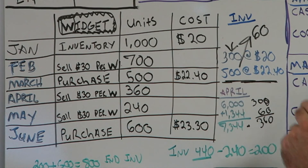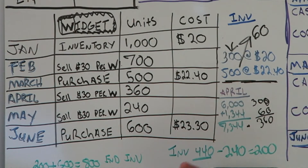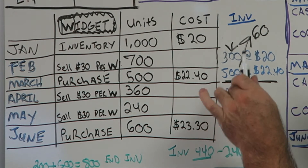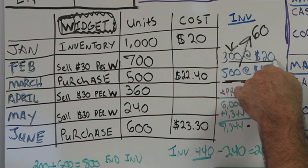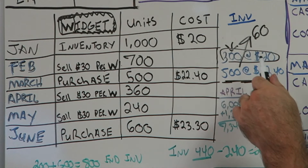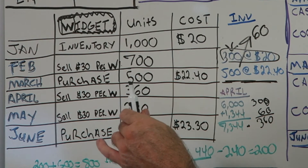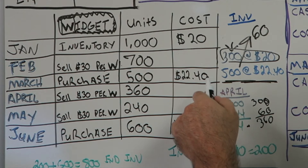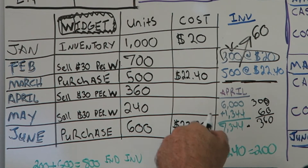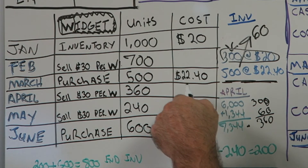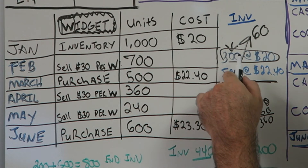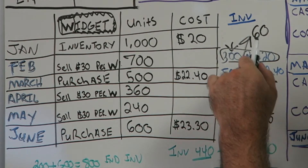Because we're doing First-In First-Out, the first items in inventory — those 300 at $20 — are the first out. We needed to sell 360, so all 300 go first, and then 60 of the 500 at $22.40 follow. That gives us $6,000 plus $1,344 equals $7,344 — that's our Debit Cost of Goods Sold and Credit Inventory. After that sale, we'd have 440 units remaining in inventory at $22.40.